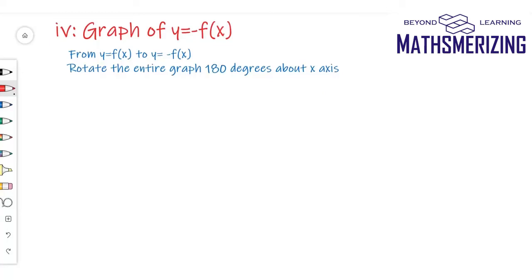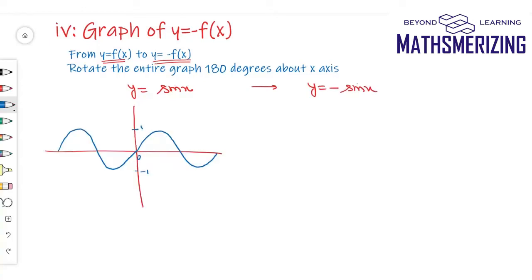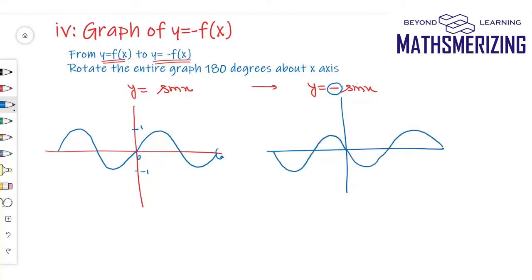The fourth transformation is: from the graph of y equals f(x), draw the graph of y equals −f(x). We rotate the entire graph 180 degrees along the x-axis. For example, from y equals sin x, I want to draw y equals −sin x. Rotating the graph 180 degrees along the x-axis gives the graph of −sin x.